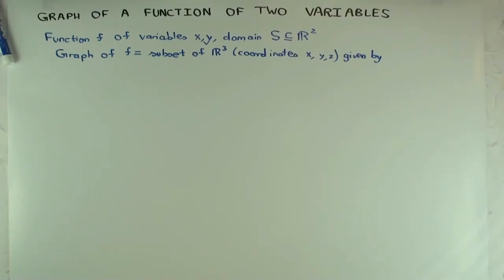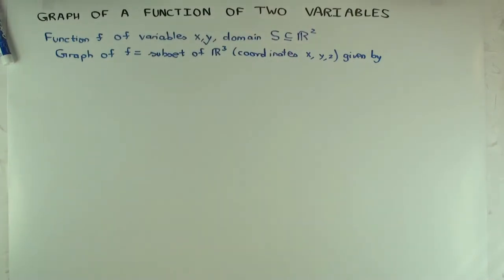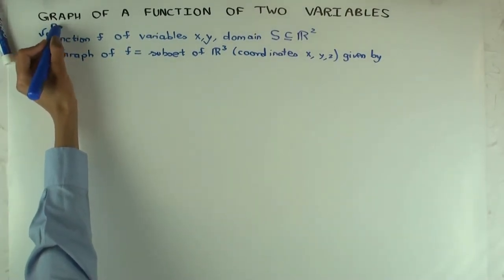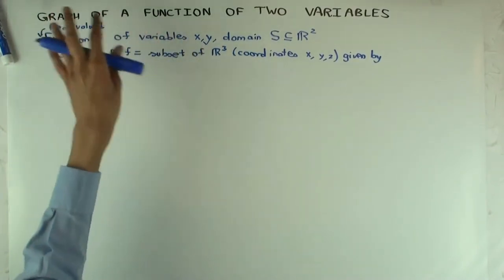Okay, so in this talk I'm going to consider the graph of a function of two variables. The setup is like this: you have a function f, and by function I mean real valued function, so the function output is just one variable and the inputs are two variables, so total you have three variables in the picture.